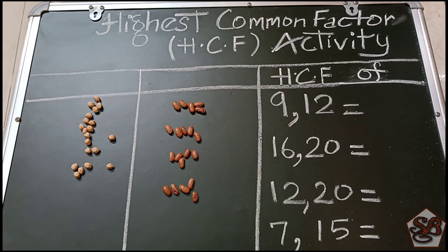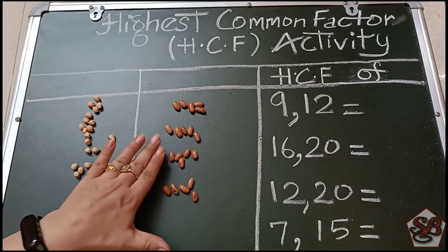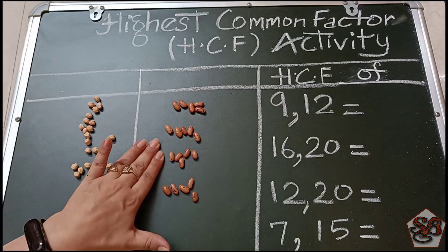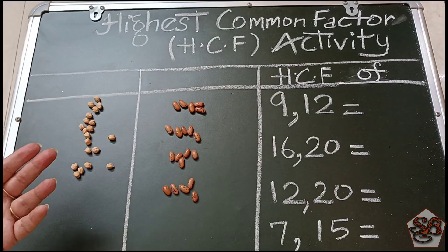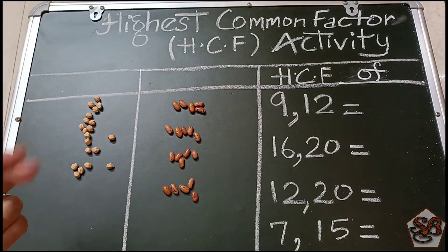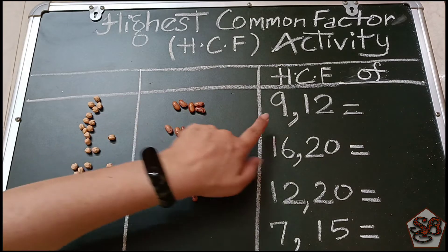What do we need? We need some chana seeds and some rajma seeds for this activity. You all know that the two numbers that we multiply to get a multiple, they are the factors. So let's see how we can find factors through the activity.